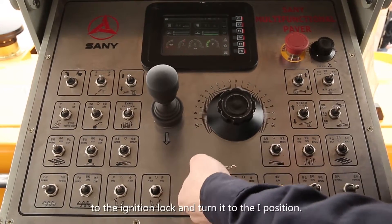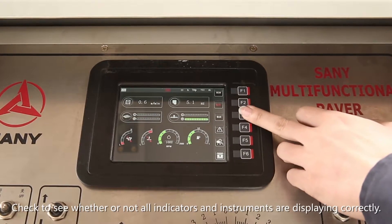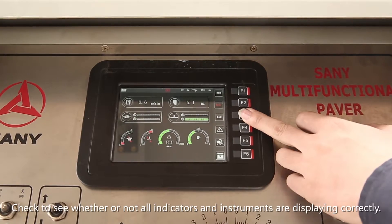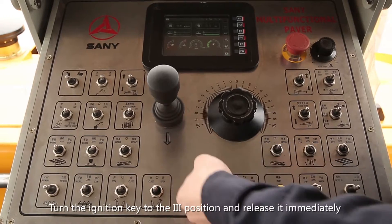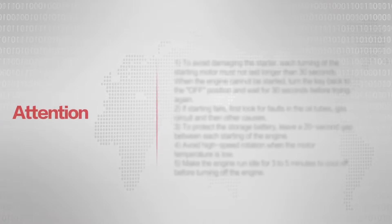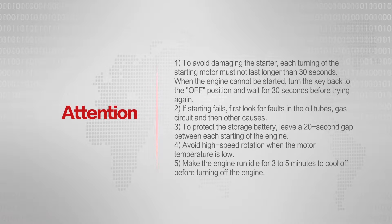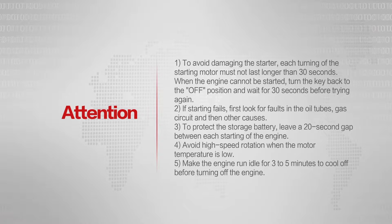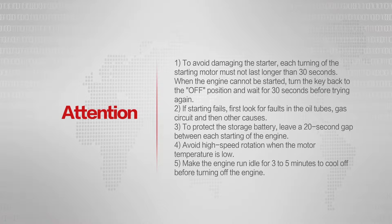Insert the key to the ignition lock and turn it to the one position. Check to see whether or not all indicators and instruments are displaying correctly. Turn the ignition key to the three position and release it immediately when the engine has been started. To avoid damaging the starter, each turning of the starting motor must not last longer than 30 seconds. When the engine cannot be started, turn the key back to the off position and wait for 30 seconds before trying again.